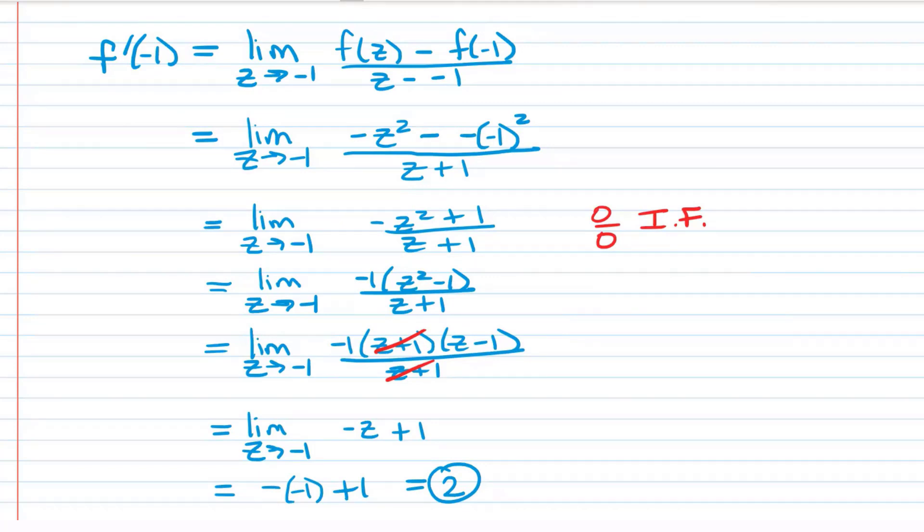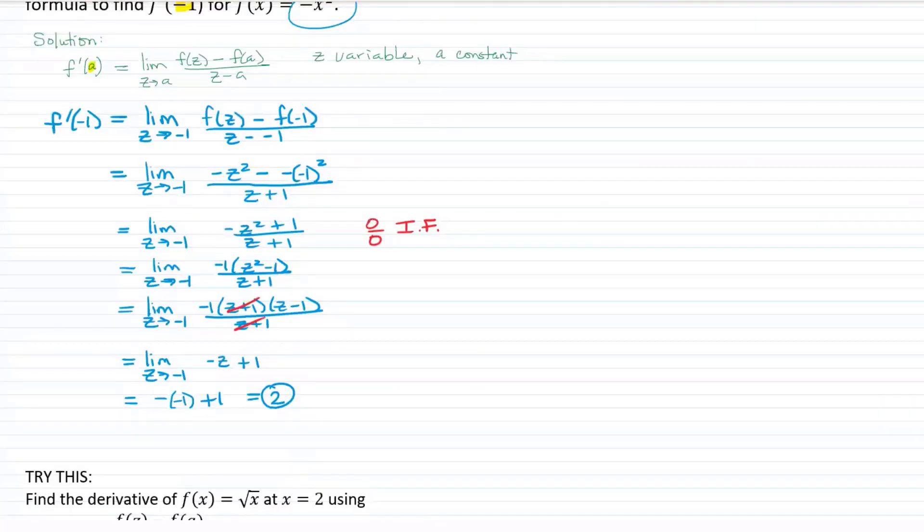I want you to look at your paper right now if you've been taking notes. And just make sure that your work looks like this check to make sure, for example, you wrote the limit as z approaches negative one each time up until the point where you plugged in.